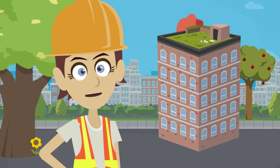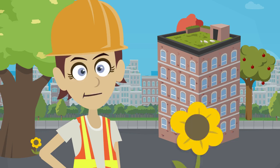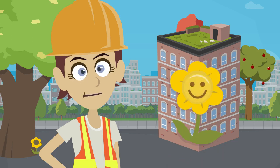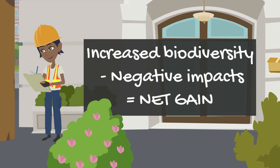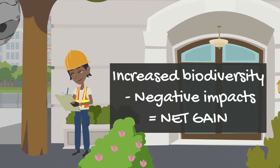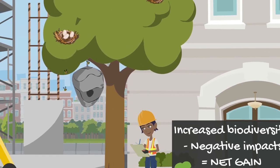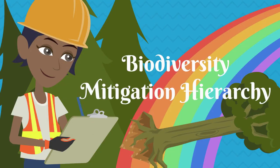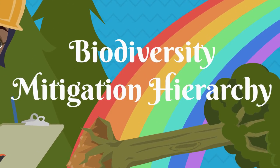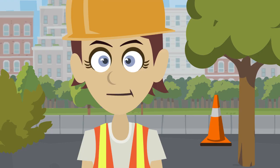This approach, referred to as biodiversity net gain, is a term used to describe how construction projects can be realised whilst achieving an overall positive impact on biodiversity. Taking a net gain is a great way for a construction project to have a positive impact on the local environment, and from the perspective of working on site you might be asked to manage impacts to biodiversity using something called the biodiversity mitigation hierarchy.